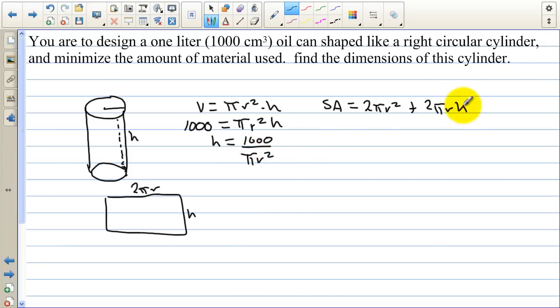So h equals 1,000 divided by pi r squared. Now we're going to take that value and plug it in over in the h because we want to minimize the surface area used. So we have 2 pi r squared plus 2 pi r times 1,000 over pi r squared. So the new surface area function in just one variable instead of 2 equals 2 pi r squared plus. Now the pi is going to cancel out. And one of the r's is going to cancel out. So we have 2,000 over r.